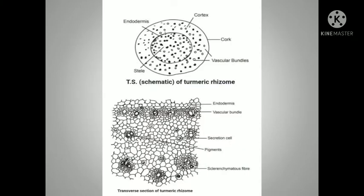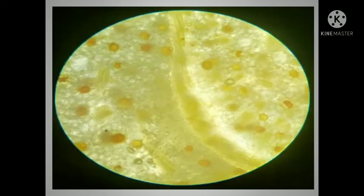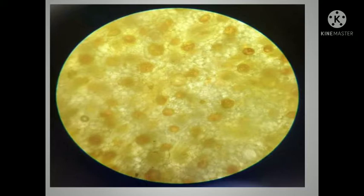This is the TS diagram of turmeric. It shows the upper cork, lower cork, cortex, vascular bundles, pith, and the starch grains. This diagram also shows the endodermis in the center and the oil globules. The center diagram of the TS of turmeric shows the pith and the oil globules in the center.